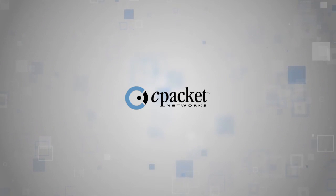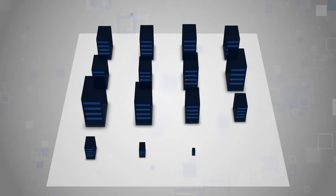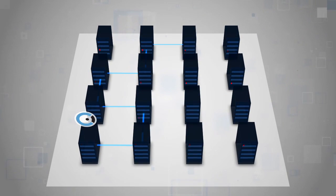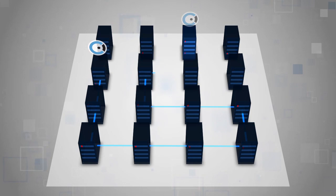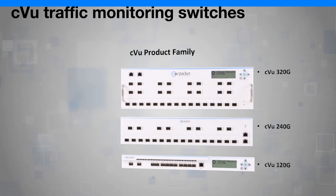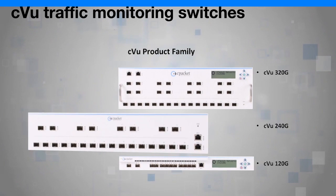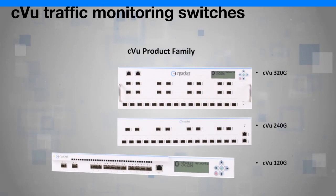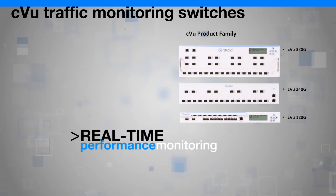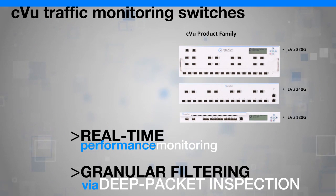At CPacket, we enable pervasive network intelligence and visibility with innovative solutions that help you streamline and optimize your network operations. Our CView traffic monitoring switches combine flexible matrix switching, real-time performance monitoring, and granular filtering via deep packet inspection.